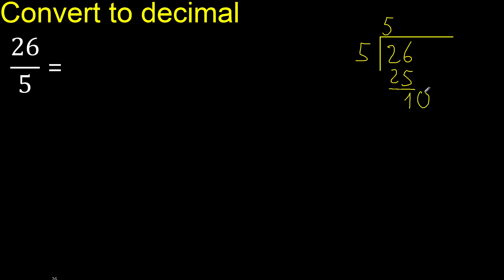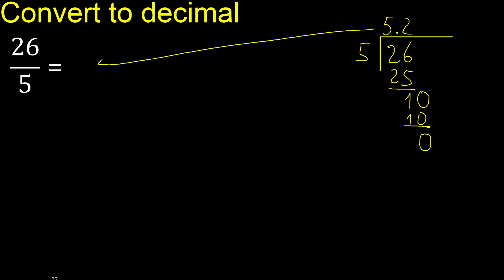Therefore complete with 0 — here with a point. So 0 point 10. 5 multiplied by 2 is 10. 10 is not greater. 10 minus 10 is 0. Therefore finish.